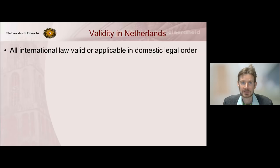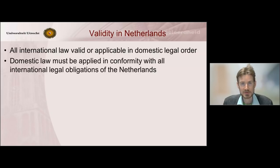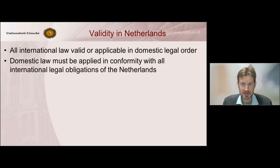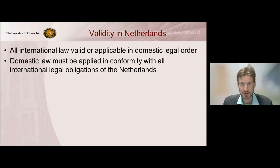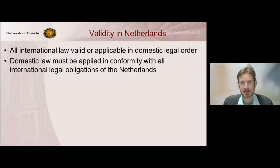Let's first look at validity. This is easy — all international law in the Netherlands is valid, is applicable in the domestic legal order. Most of international law is applied indirectly, so indirect applicability. This refers to a situation where domestic law is interpreted in conformity with the international obligations of the Netherlands. So all domestic law has to be applied in such a way that it is in conformity with the Netherlands' international obligations. We call that indirect applicability of international law.